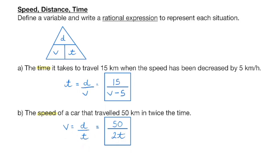One type of problem you'll encounter is a speed-distance-time problem. You can use this triangle to help recall the relationship between those three variables. You can also use the units to help you. Speed or velocity is distance divided by time — think kilometers per hour.